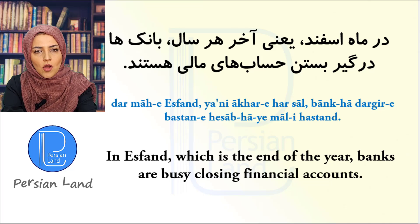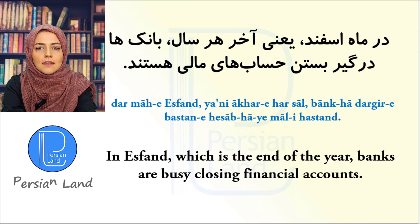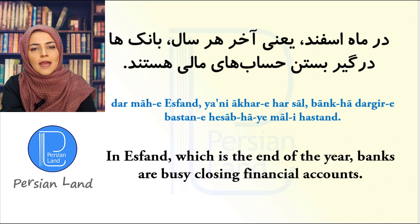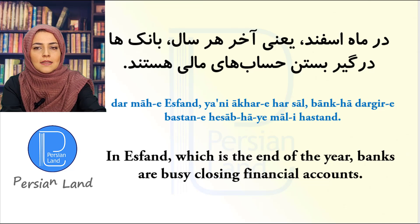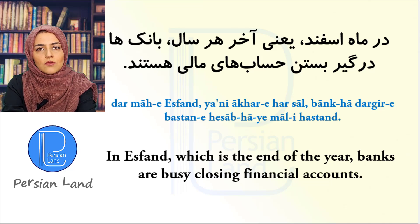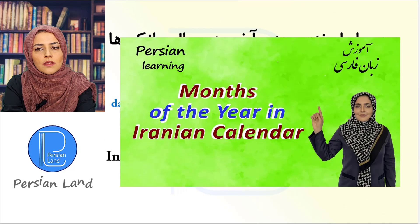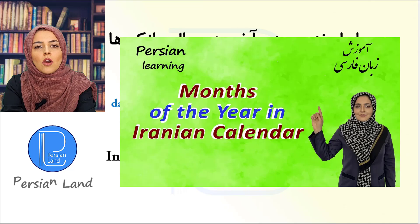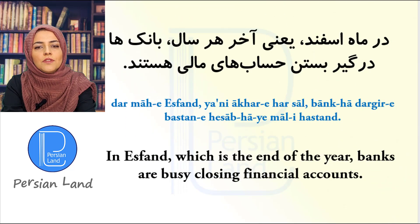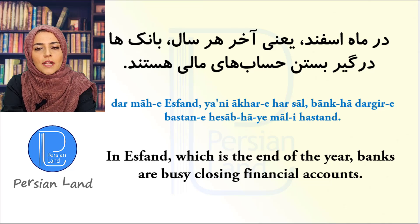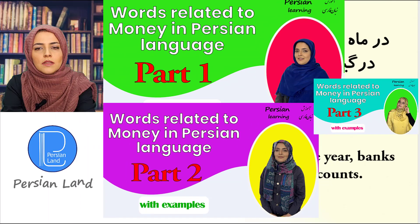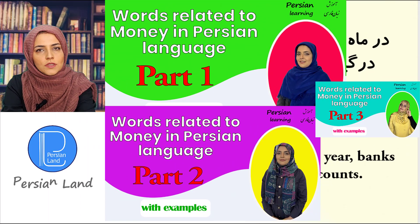در ماه اسفند، یعنی آخر هر سال، بانک ها درگیر بستن حساب های مالی هستن. ماه اسفند is the last month in the Iranian calendar. آخر هر سال means 'the end of the year'. درگیر بودن means 'to be busy with something'. حساب های مالی means 'financial accounts'. You can watch my clips about words related to money — link in the description.